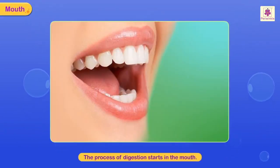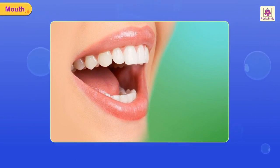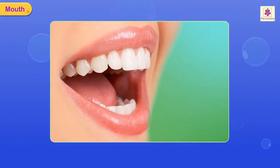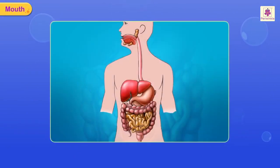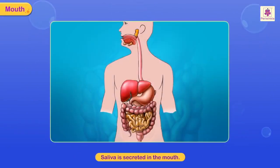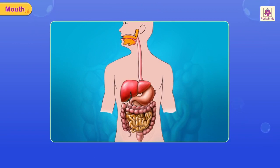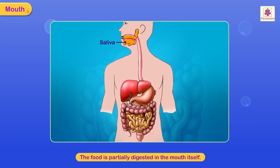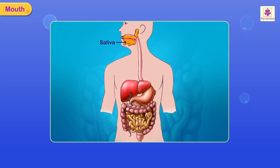The process of digestion starts in the mouth. We chew the food with our teeth, and as we do so a juice is secreted in the mouth called saliva. Saliva mixes with the food and makes it soft. The more you chew your food, the better it mixes with saliva, and the food is partially digested here.